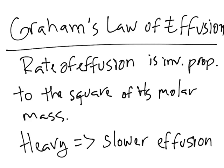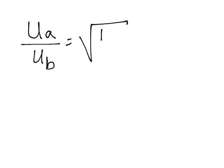And to put the concept into numbers, Graham's Law of Effusion is written as Ua over Ub is equal to the square root of the molar mass of B over molar mass of A.